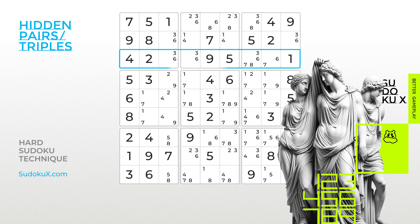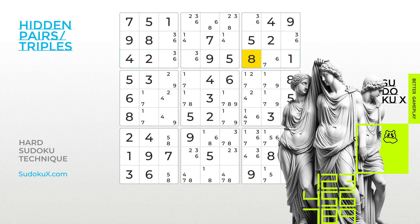Now, staying with the third highlighted row, we can see that the number 8 can only be placed in the highlighted cell. This is called a hidden single. Let's place it and proceed to solve the Sudoku board further. Cool!